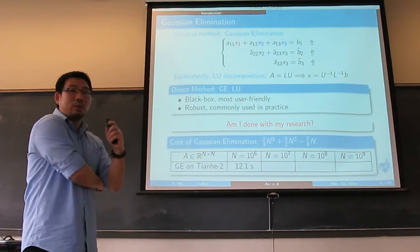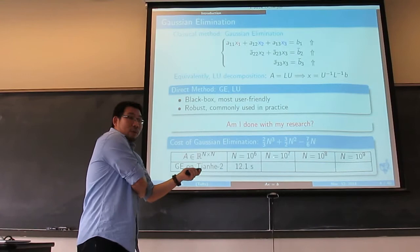You get some number, then divide it by the performance number. That's the seconds you need. It turns out 12 seconds. It's good, right? Not that bad.